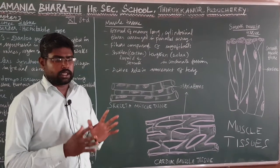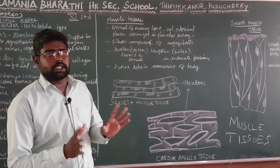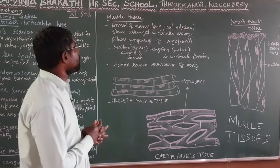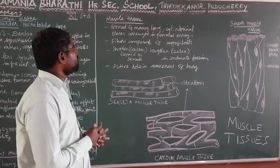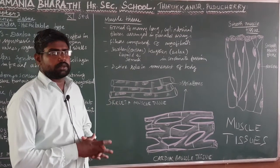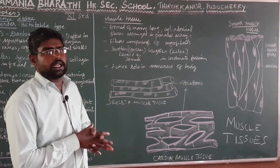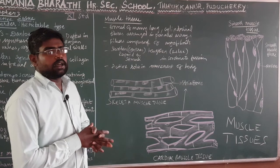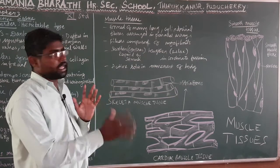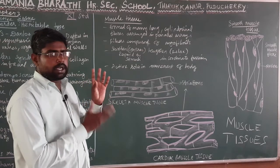Muscle tissue is a common arrangement. They are arranged in long cylindrical muscles in parallel arrays, bundled together. When we talk about muscle tissue, the myofibril is the basic unit — a muscle unit within a bundle.